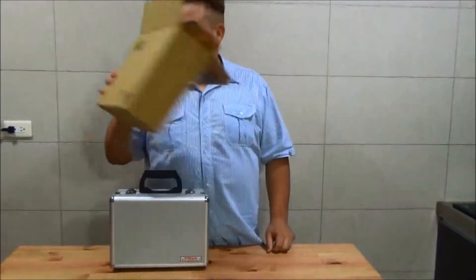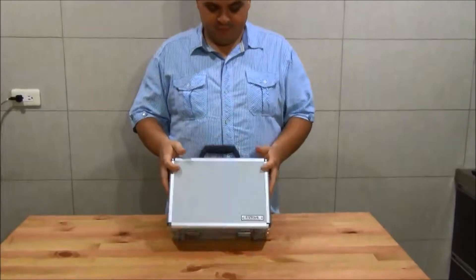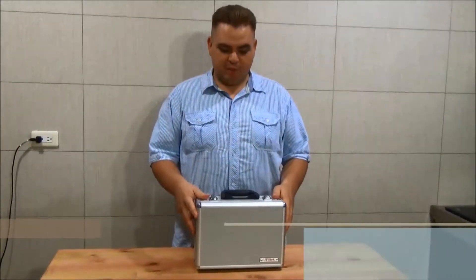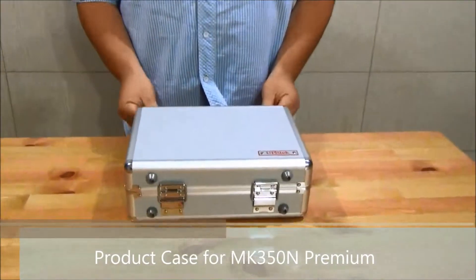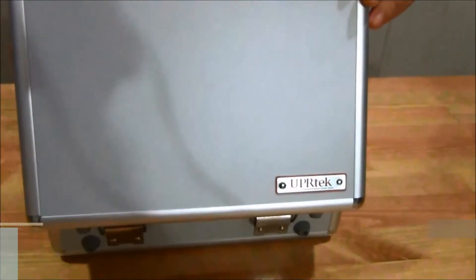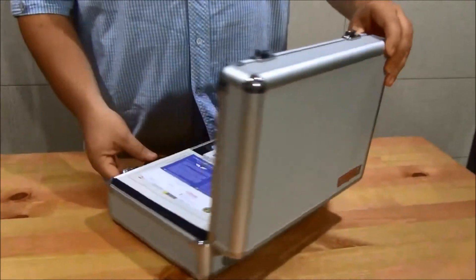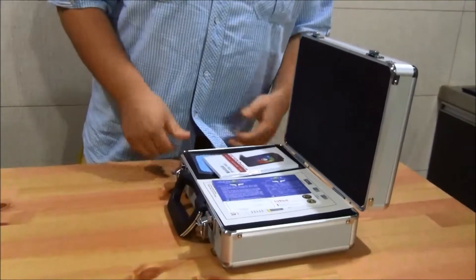As you can see, the MK350N Premium comes in a really sturdy metal with plastic box, and this is how it looks more or less when you first open it.